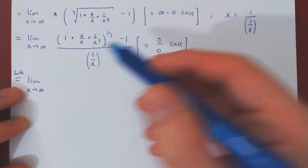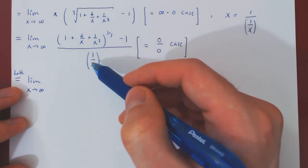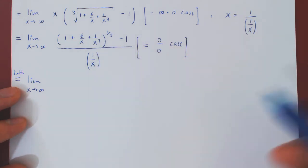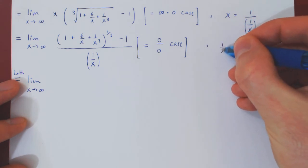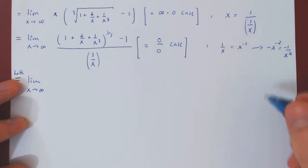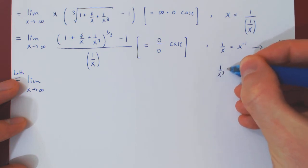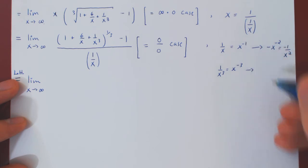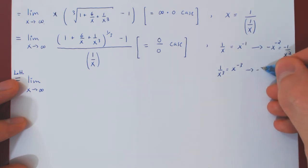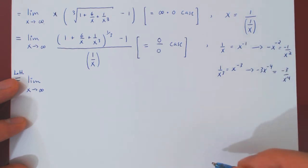Before we begin differentiation, when we differentiate the 6 over x and 1 over x cubed terms, we will use the power rule rather than the quotient rule. We think of 1 over x as x to the minus 1, so differentiating gives negative x to the negative 2, which is simply negative 1 over x squared. Similarly, 1 over x cubed is x to the negative 3. Differentiating by the power rule gives negative 3 times x to the negative 4, which is the same as negative 3 over x to the fourth.